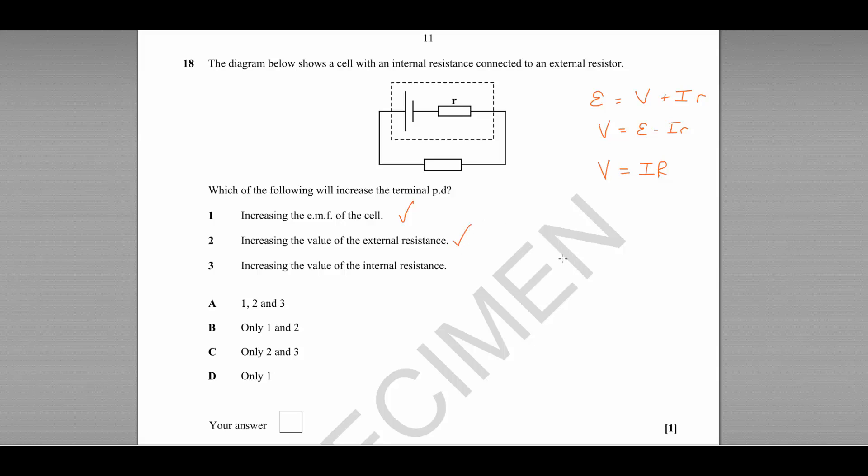And statement three, increasing the value of the internal resistance. Well, that is not correct. If we increase the internal resistance here, then I little r would become larger. Therefore, V would become smaller. So statement three is incorrect, which means that the correct answer is B.